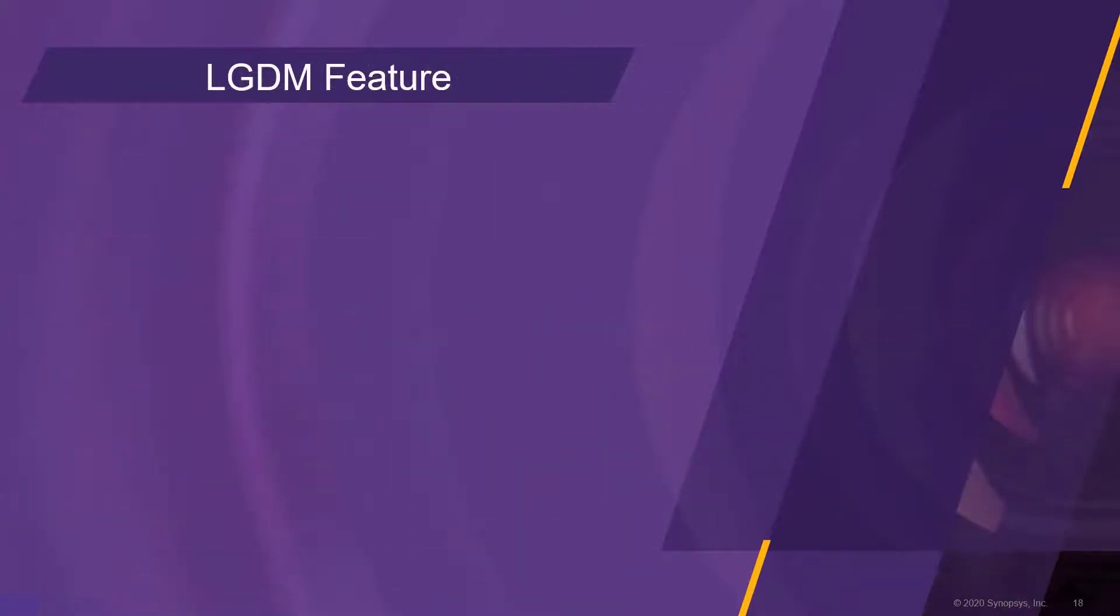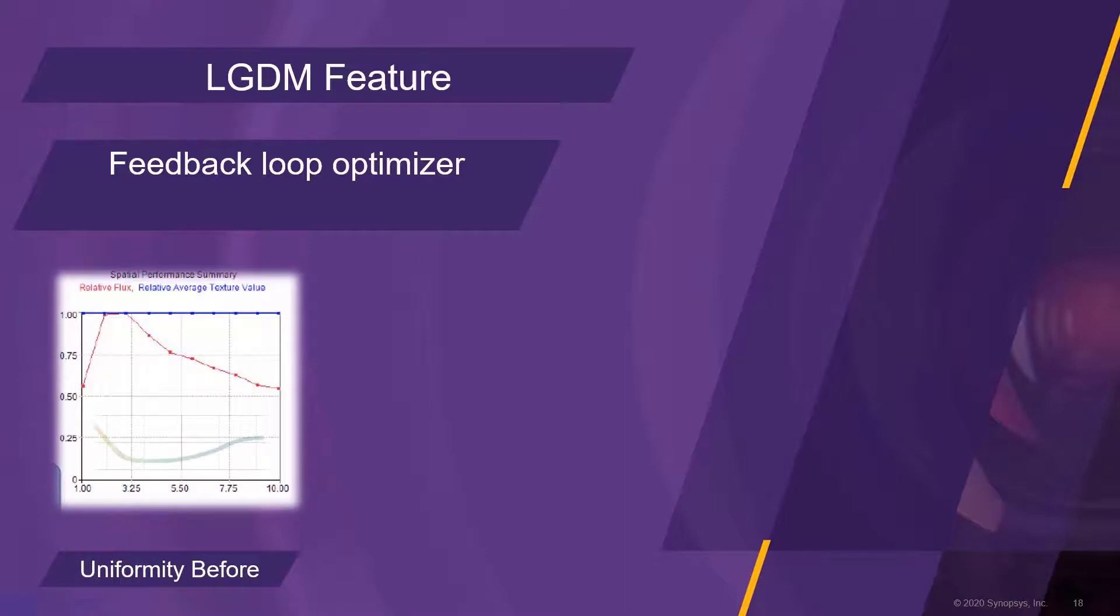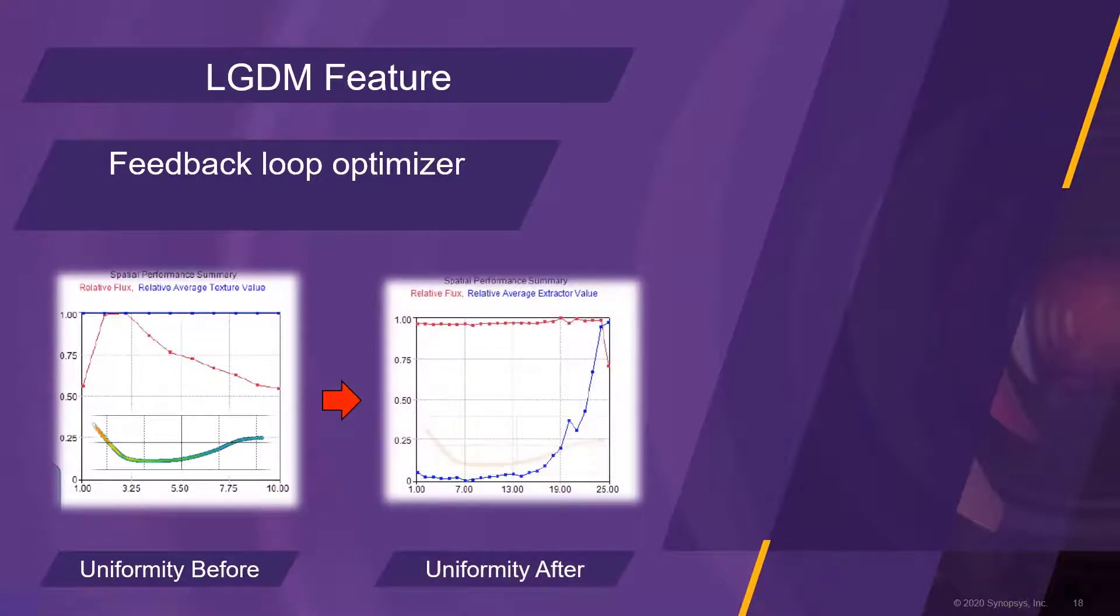The light guide design tool utilizes a feedback loop optimizer. It offers combined optimization for uniformity and light direction. The red graphs indicate how the light extraction becomes considerably more even after optimization.